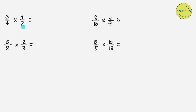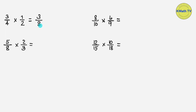Let's multiply the numerators: 3 times 1 equals 3. Multiply also the denominators: 4 times 2 equals 8. The answer is 3 eighths. 3 eighths is already in lowest term because the numerator and the denominator do not have any common factor aside from 1. So this is the final answer.